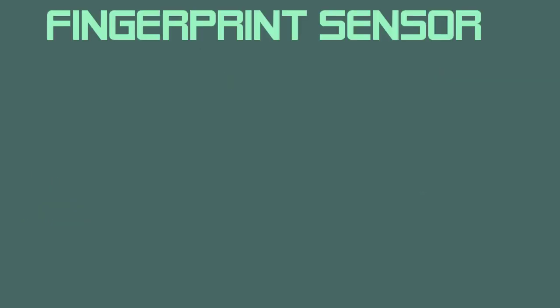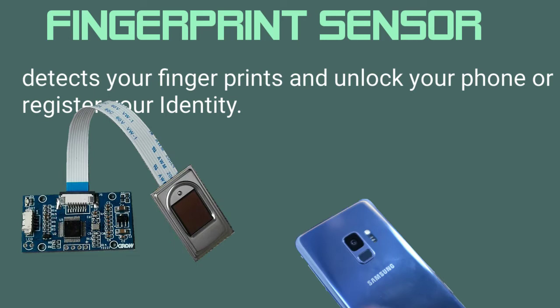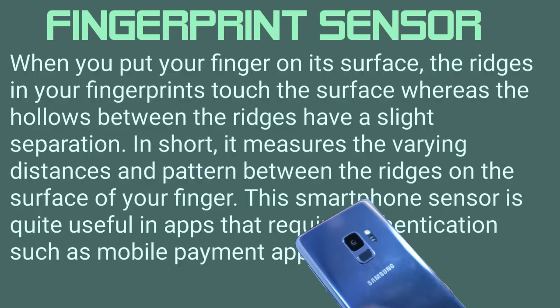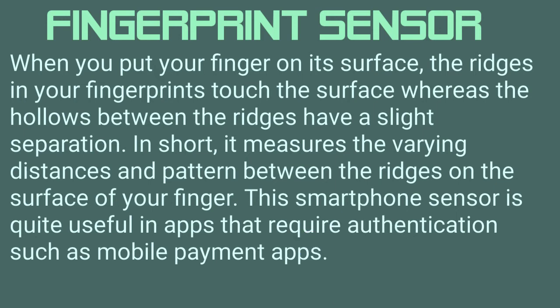Fingerprint Sensor detects your fingerprints and unlocks your phone or registers your identity. When you put your finger on its surface, the ridges in your fingerprints touch the surface whereas the hollows between the ridges have a slight separation. In short, it measures the varying distances and patterns between the ridges on the surface of your finger. This sensor is quite useful in apps that require authentication, such as mobile payment apps.